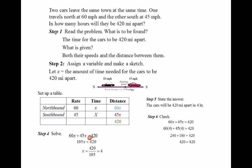This would be my equation: 60x plus 45x equals 420. We can solve for x. Combining like terms, divide both sides by the coefficient of x. So x would be 420 divided by 105, which is 4.